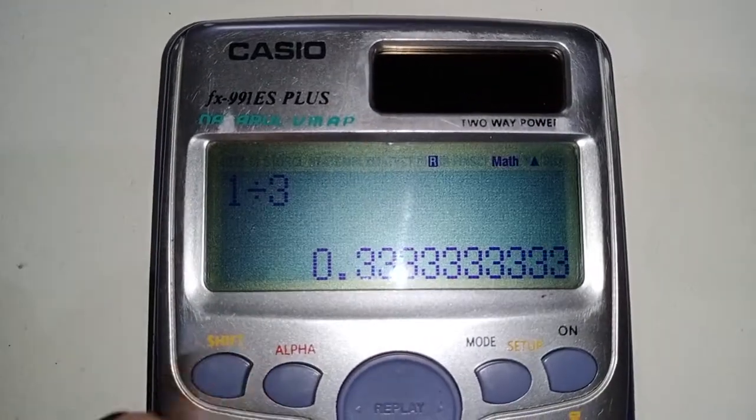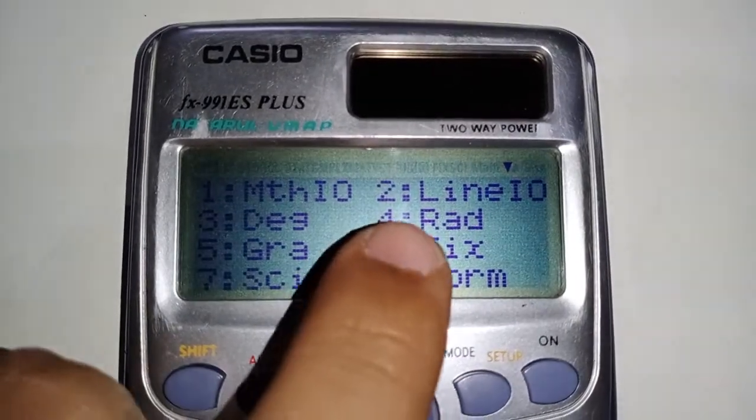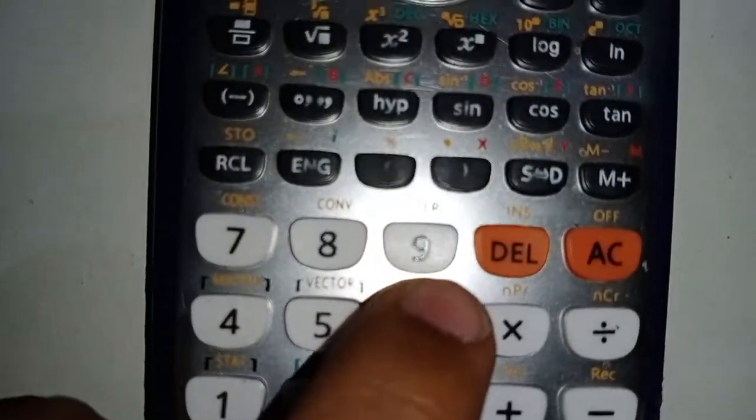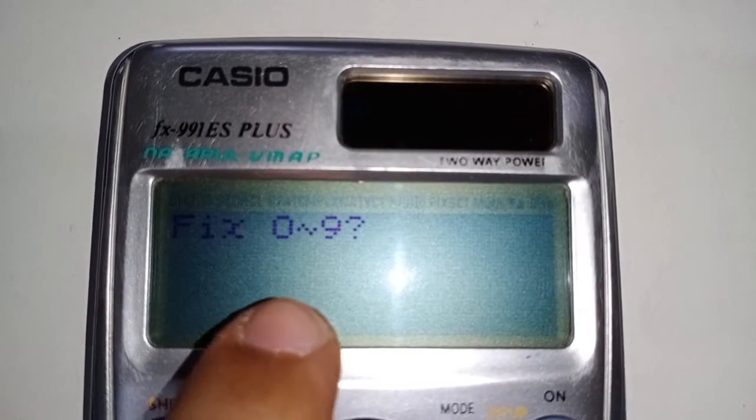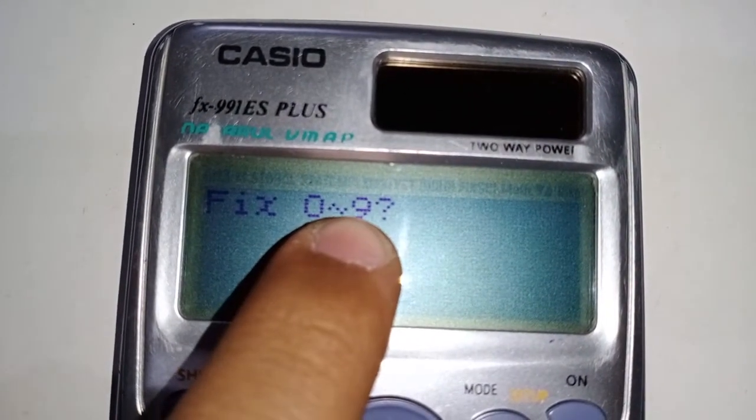Just press shift and then mode. You can see on number 6 it says fix. Then you're supposed to press 6, and you can see it asks whether you want to fix to 0 decimal places towards 9 decimal places. I want to fix to 4 decimal places.